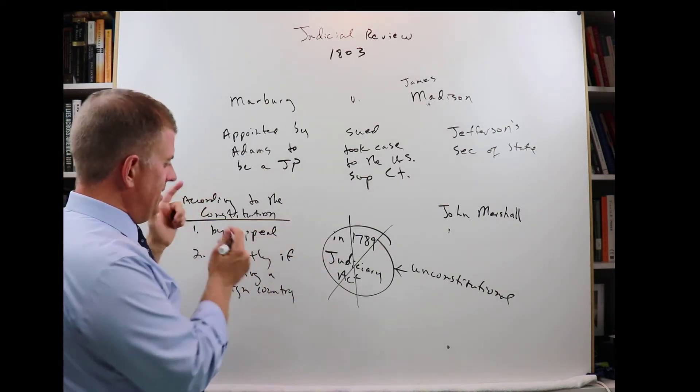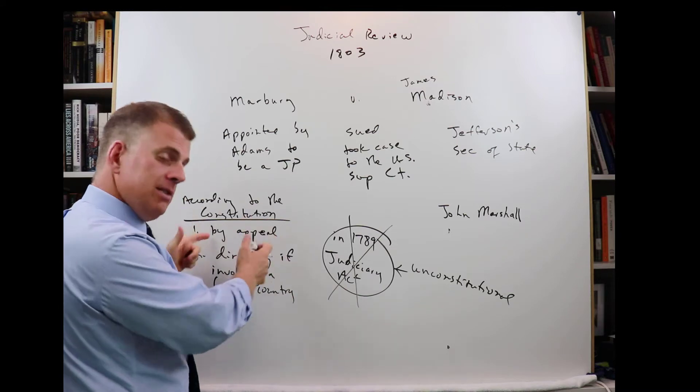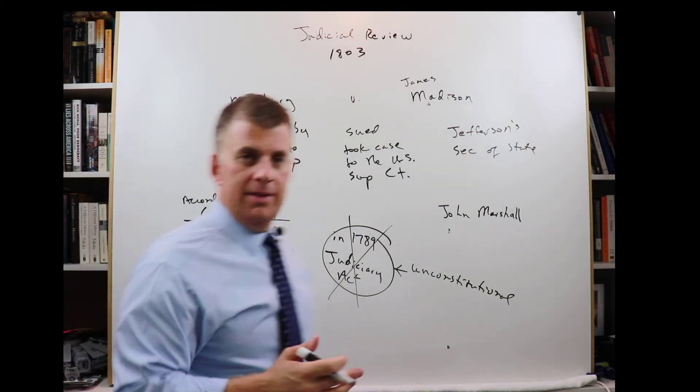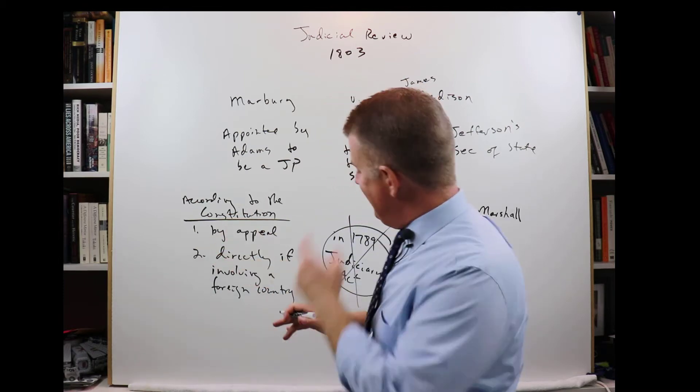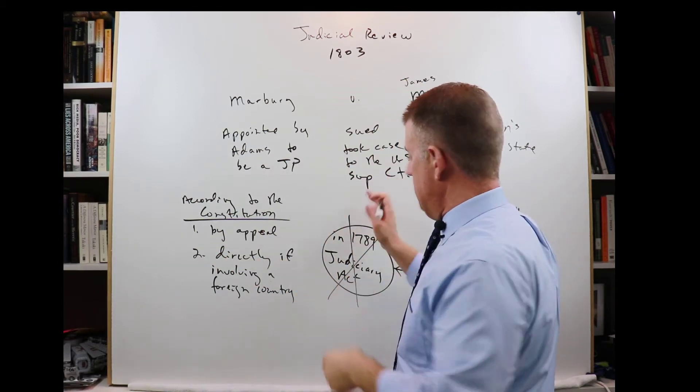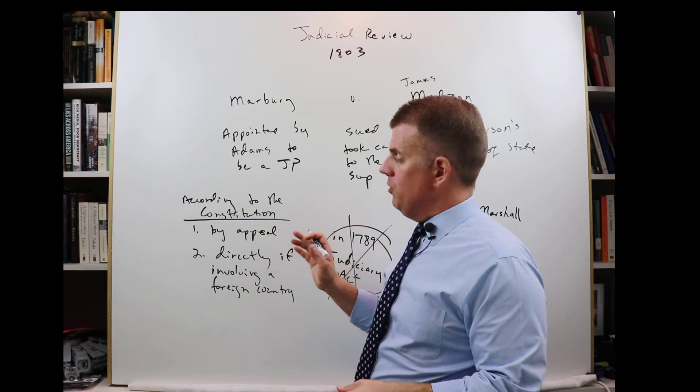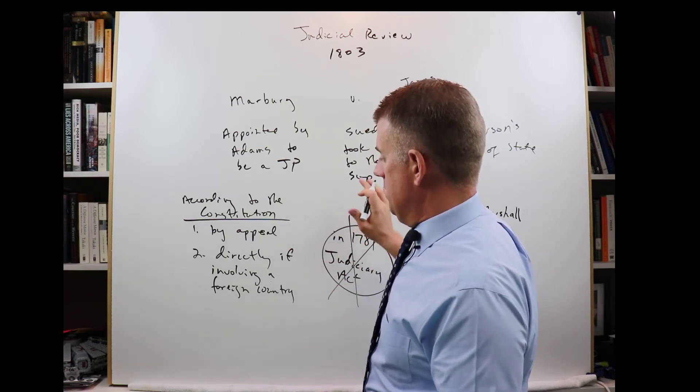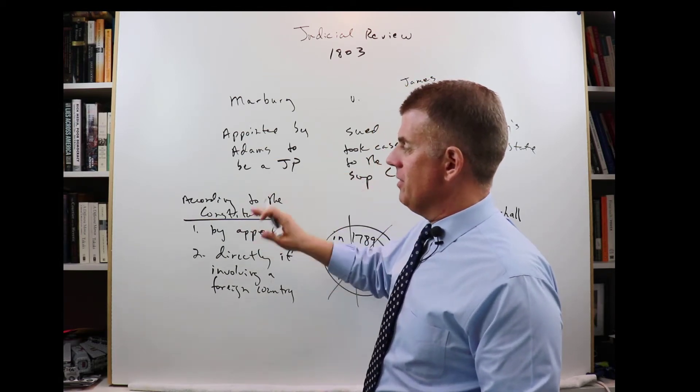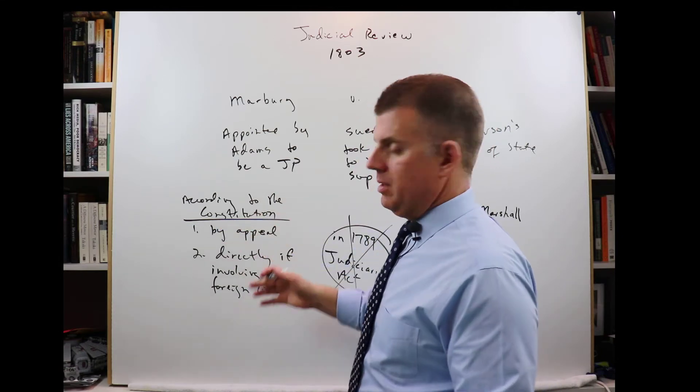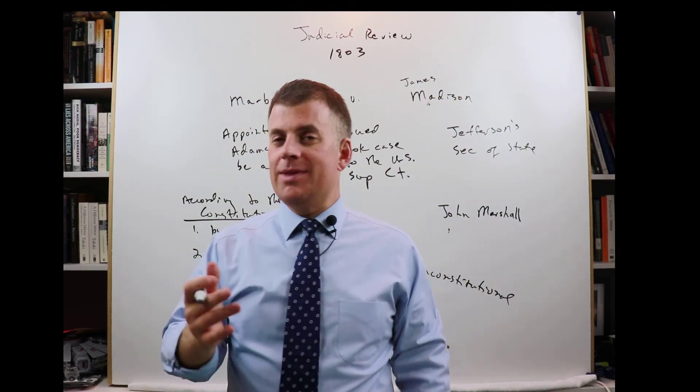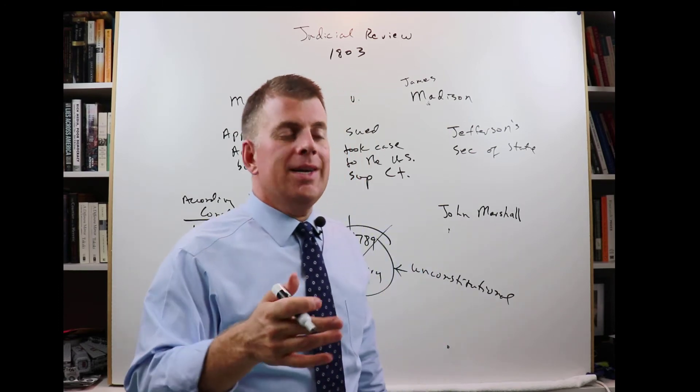They said, no, no, no, no, no, no. The Constitution says this. This is the law of the land. It said that the Constitution is the law of the land, not any law that Congress wants to come up with. And a law that Congress comes up with, if it does not follow the Constitution, if it contradicts the Constitution, it's unconstitutional.